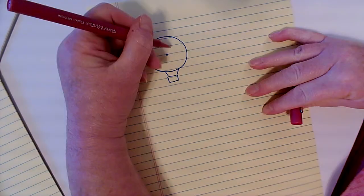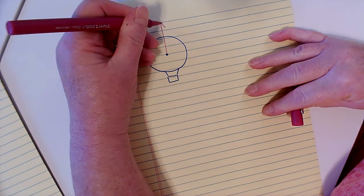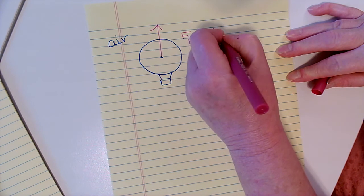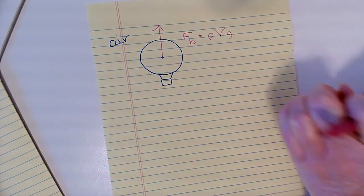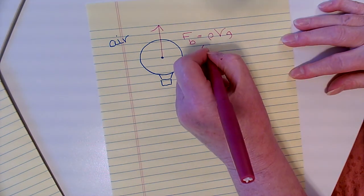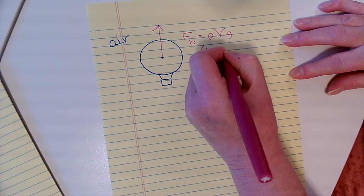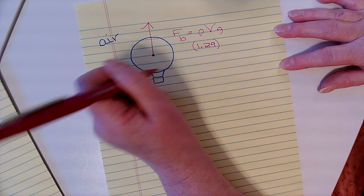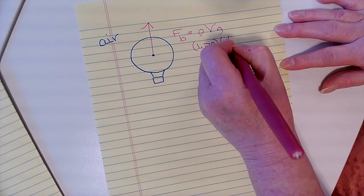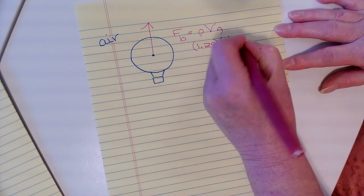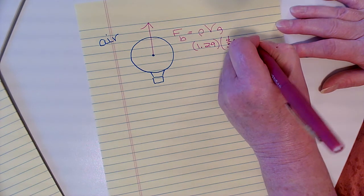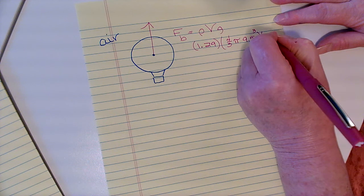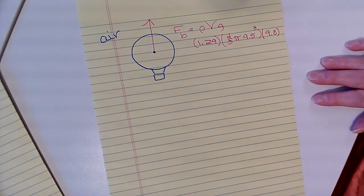There is a buoyant force acting on our balloon. The buoyant force, because we're in a fluid, is ρVg. The fluid that we are in has a density of 1.29 because it's air. You have to know that the volume of a sphere is 4/3πr³. The radius of the balloon is 9.5 meters, so that's 9.5 cubed, and then there's a times 9.8 here.